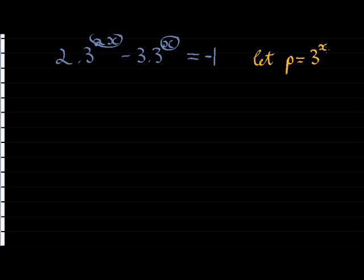So we're going to say let p equal to 3 to the power of x. Now, what is going to happen to the power of 2x? Well, 3 to the power of 2x is simply 3 to the power of x that was squared. In other words, that's simply p squared.